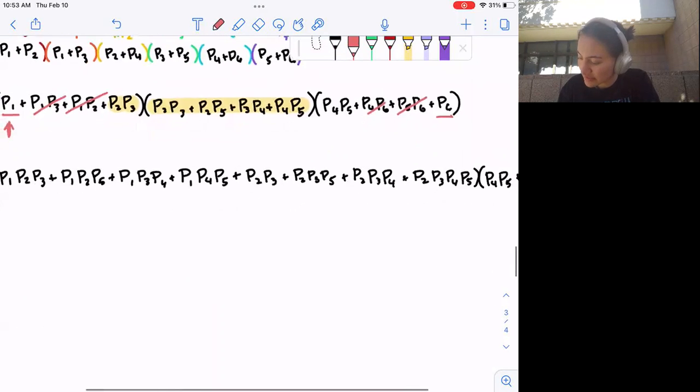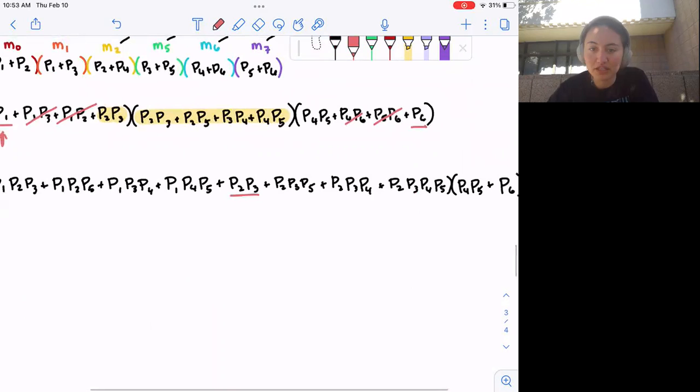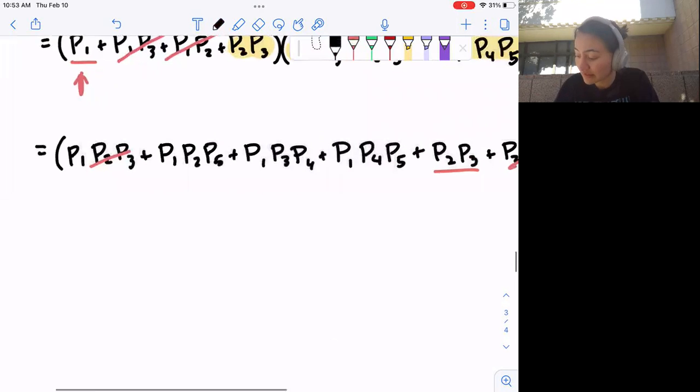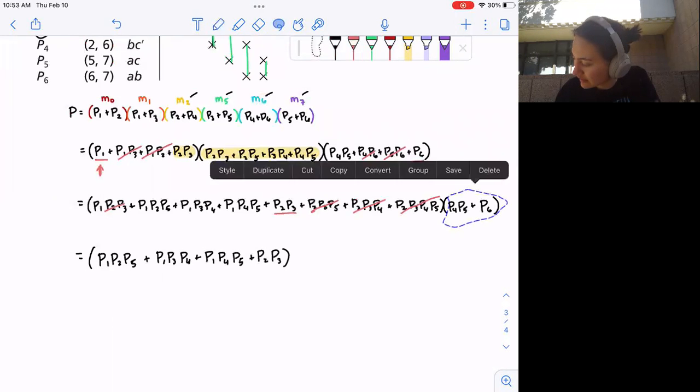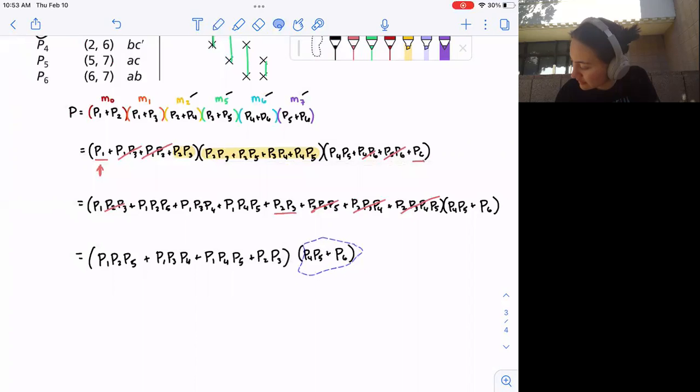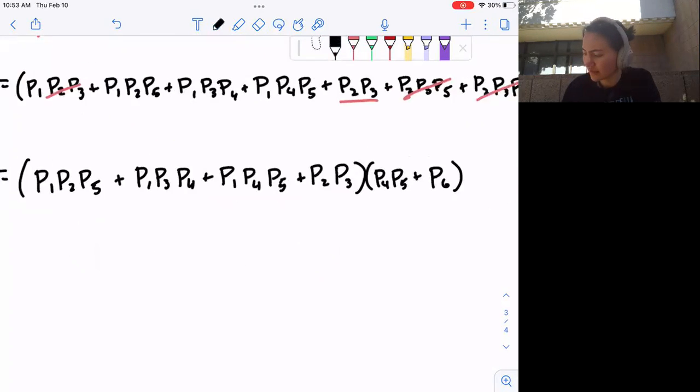We have P1 P2 P5, plus P1 P3 P4, plus P1 P4 P5, plus P2 P3. And that's all going to be multiplied by this guy on the end. Hang in there.